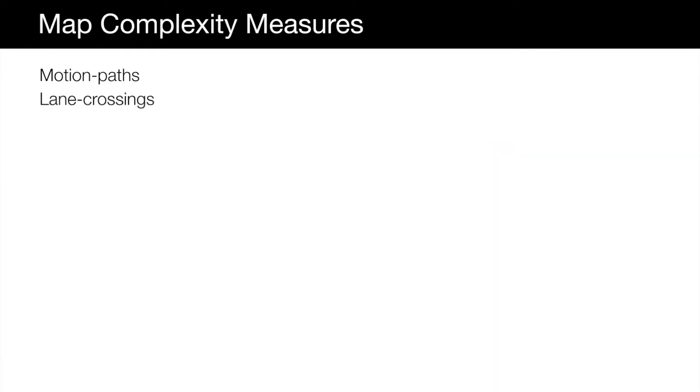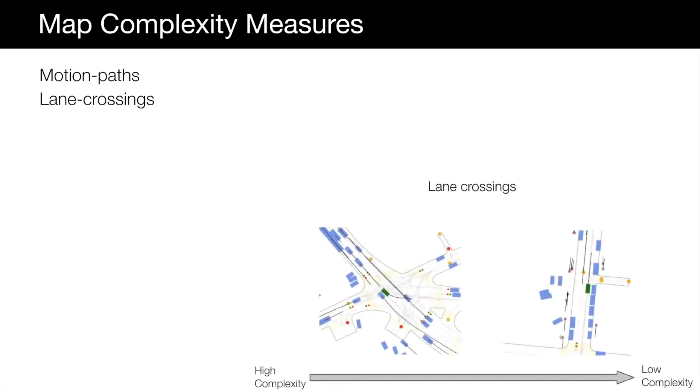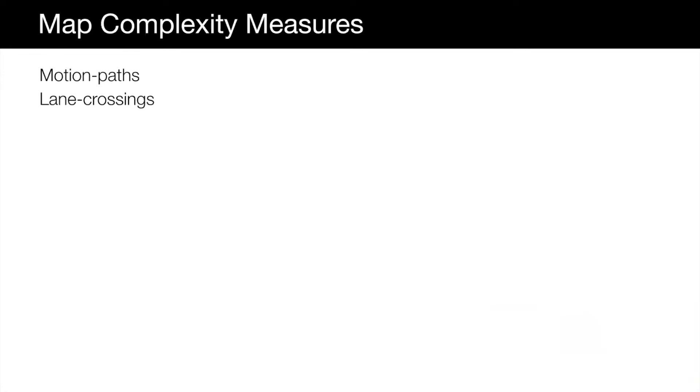Another important measure is the number of crossings in vehicle lanes and bike lanes. Here are two other examples highlighting this measure. We can see that regions with high number of crossing lanes is an indication of possible complex interactions between the actors compared to non-interacting parallel lanes. Other map-related complexity measures include crosswalks, number of intersections and traffic controls as well as high change in the map.